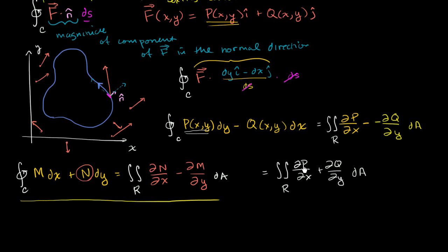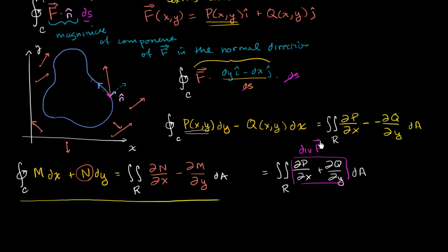And obviously these two negatives — subtracting a negative gives you a positive — so this is going to be equal to the double integral over the region of ∂P/∂x plus ∂Q/∂y, times dA. Now, P was the function telling us the magnitude in the x direction, Q was telling us the magnitude in the y direction. Taking ∂P/∂x plus ∂Q/∂y — this is essentially, or exactly, the divergence of F. If that doesn't make any sense, go watch the video on divergence. This right over here is the divergence of our vector field F.